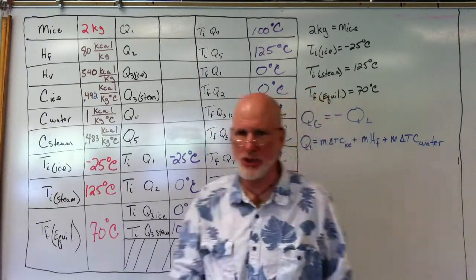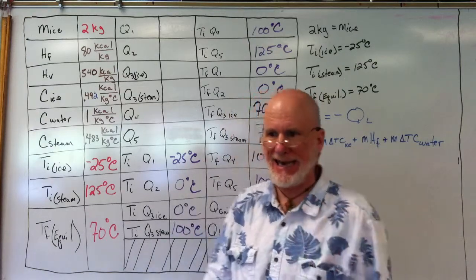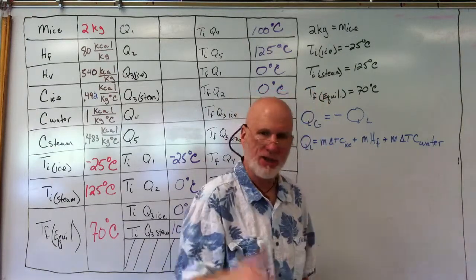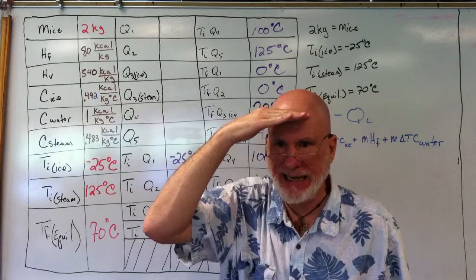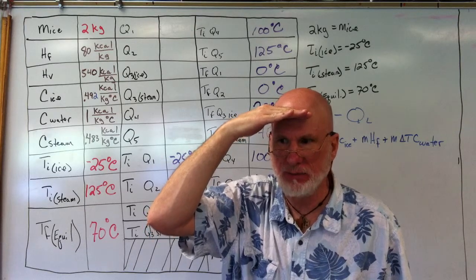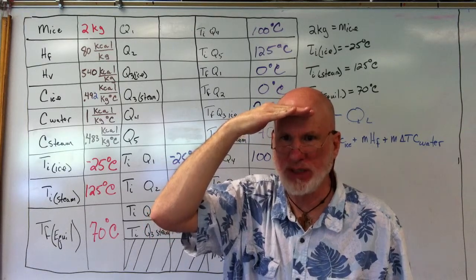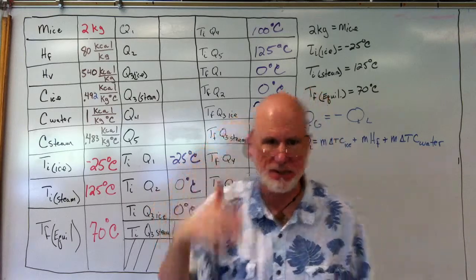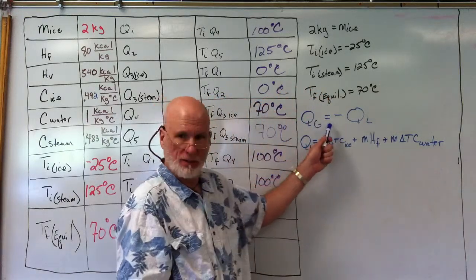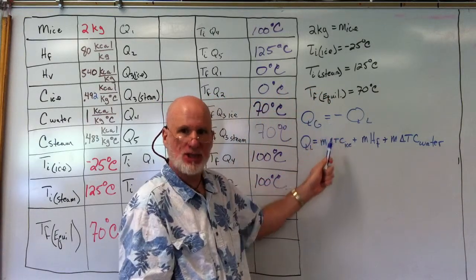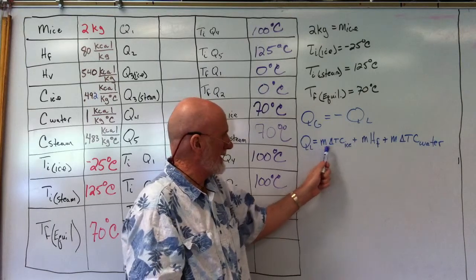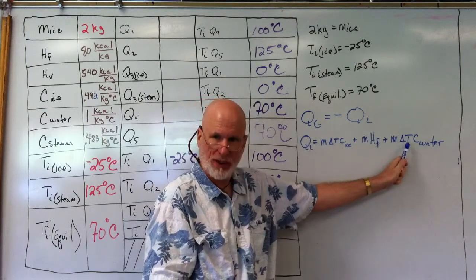All right, now what I did was we're going to do heat gained. You know the equation is heat gained plus heat lost equals zero. Heat gained equals negative the heat loss. That's what I put here. Now let's do heat gained first. Heat gained is going to be Q1, Q2, Q3.